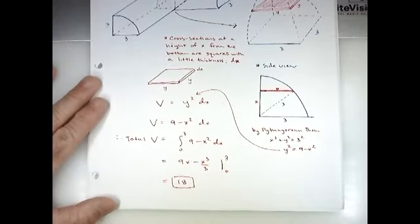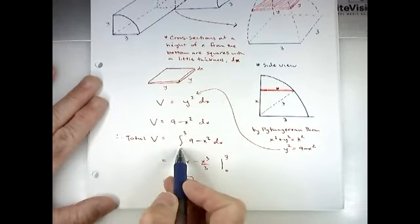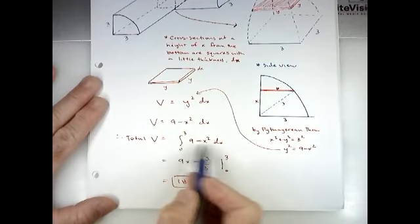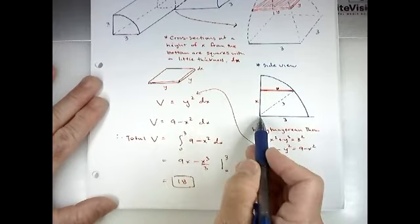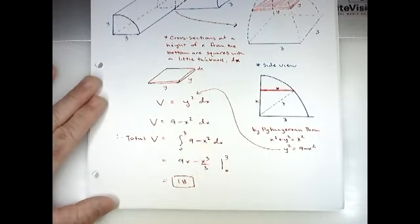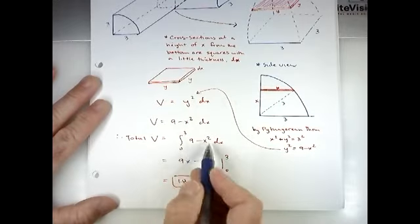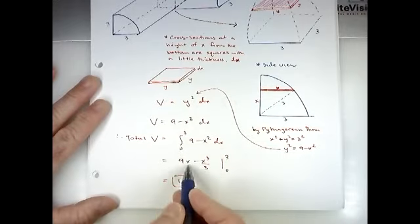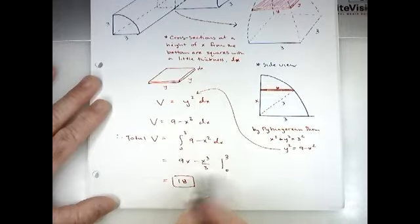To find the total volume, we integrate the volume formula (9 − x²) dx from zero to three — from the bottom to the top. Using the power rule and plugging in three and zero gives us a volume of 18.